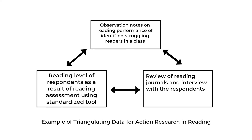This is an example of triangulating data for action research in reading. First, observation notes on the reading performance of identified struggling readers in a class. Second, a review of reading journals and interviews with the respondents. A third method to triangulate data is the reading level of respondents as a result of reading assessments using tools.